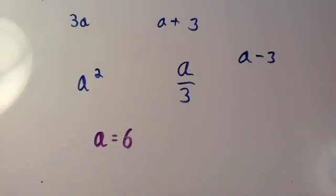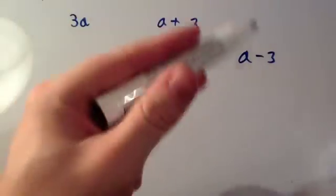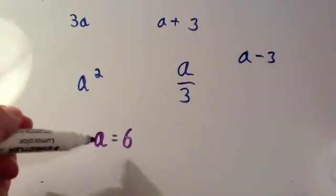And the value for a is 6. And it wants us to work out all five expressions and what their value is. Okay, so a equals 6.